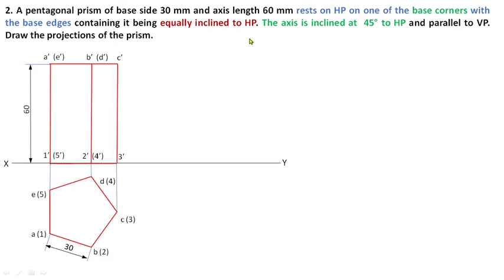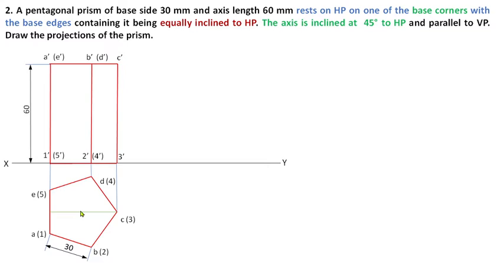Now we have to mark the axis. For marking the axis, extend the projectors or diagonal from corner C to the midpoint of AE, or from corner 3 to the midpoint of 1-2-5. Identify the midpoint of this diagonal, from where you can extend the projector to fix the axis.